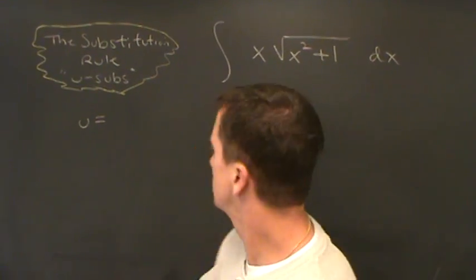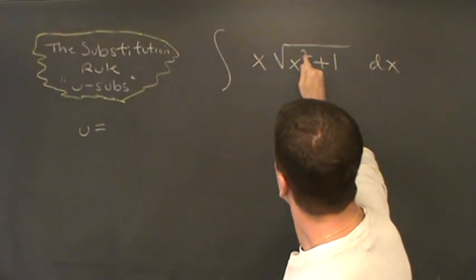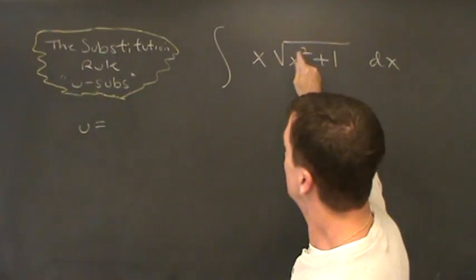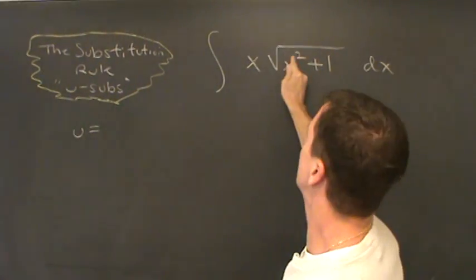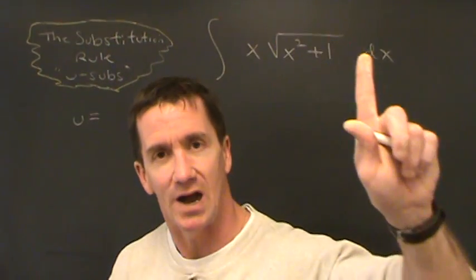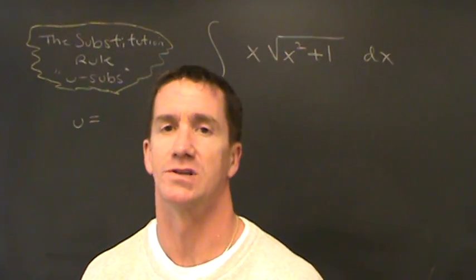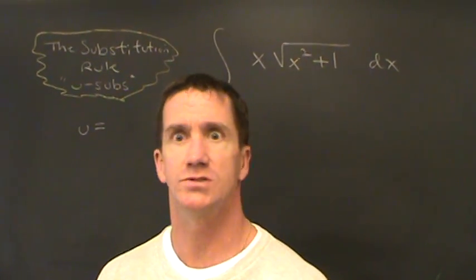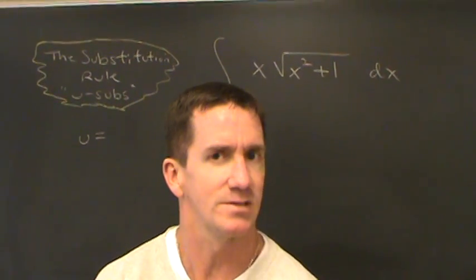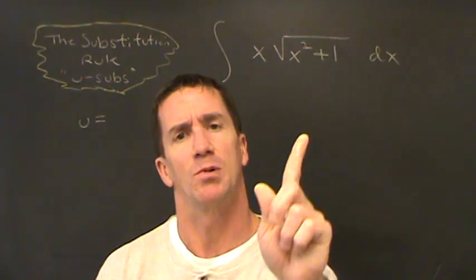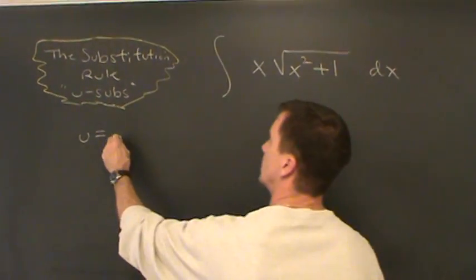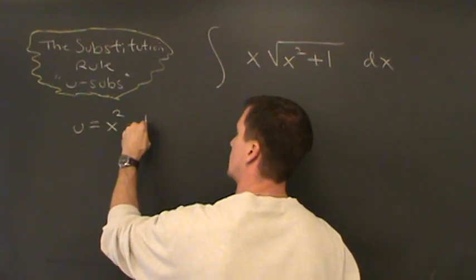Most importantly though, notice that this exponent is a two, that exponent right there is a one. This is exactly one integer higher than the other portion. And remember with derivatives, what's the derivative of x squared? It's 2x. So you look for that portion that has that exponent one integer higher. That's why I'm letting u equal this entire x squared plus one.